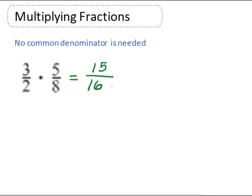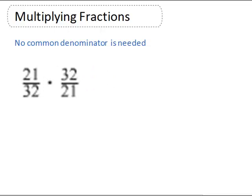Here we have 21/32 times 32/21. If we multiply across, 21 times 32 is 672, big number, and 32 times 21 is 672.